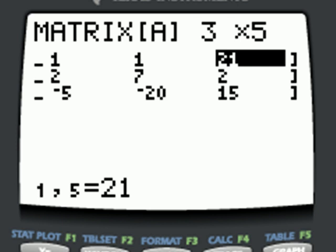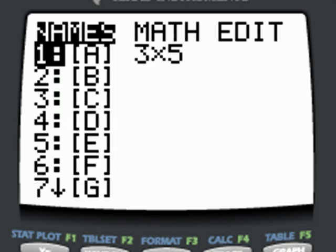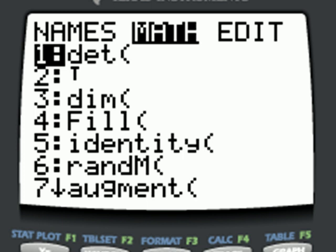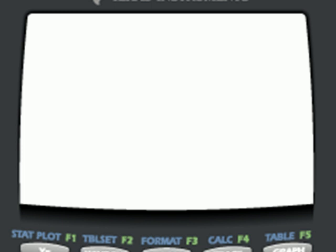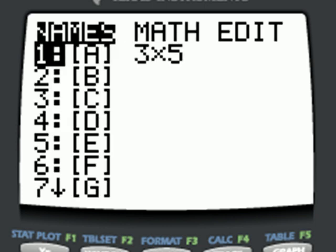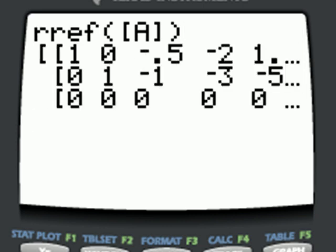We have now successfully entered our matrix. Let's go back to the entry edit screen. Second, quit. Tell the calculator we want to use the RREF feature. Second, matrix. Scroll over to math. Scroll down to RREF. Press enter. Now we need to select matrix A. So second, matrix. Leave it on names and choose matrix A. Close our parentheses. And press enter.